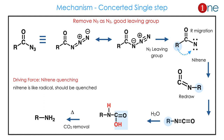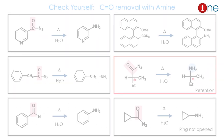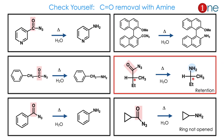The driving force for the reaction is nitrogen quenching — it is like a radical, it should be quenched. Here I've given some examples to practice yourself. You just remove the CO and write the amine — you will have the final product.